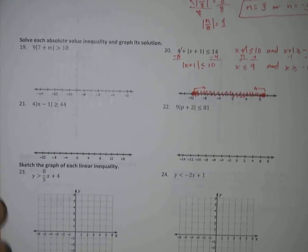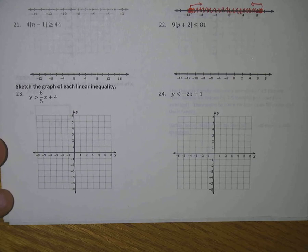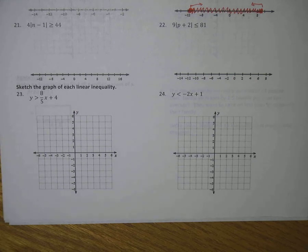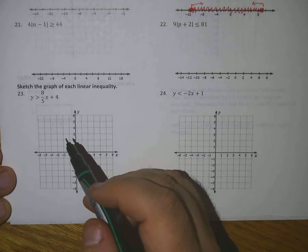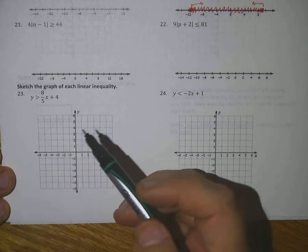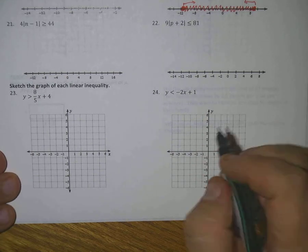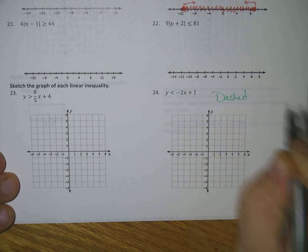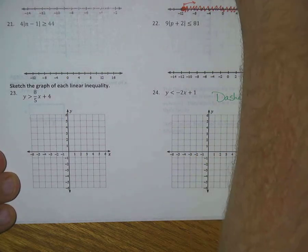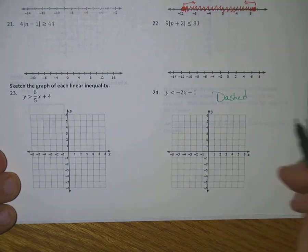Now we're going to look at linear inequalities. Remember the step-by-step process: first, figure out if the line is solid or dashed — that depends on the symbol. For number 24, that one would be dashed.